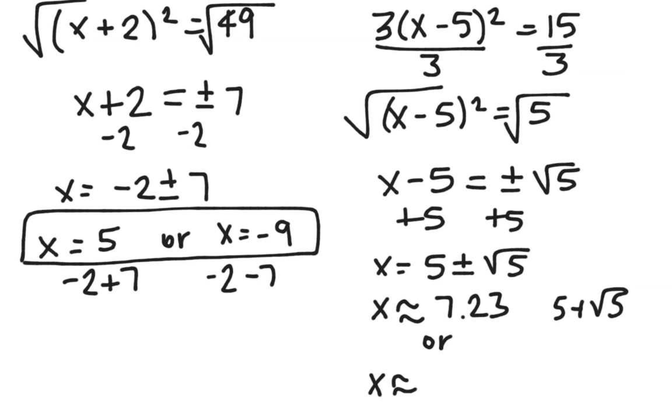I'm also going to type in my calculator 5 minus the square root of 5, and that decimal answer will be 2.76 approximately. This concludes going over how to solve a quadratic equation by taking square root. Thanks.